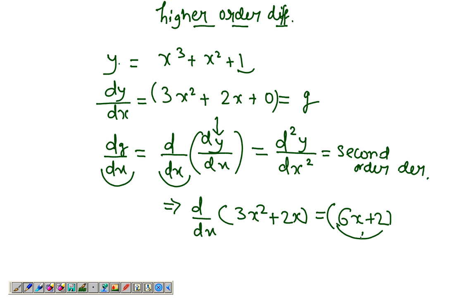Now you can go ahead and again differentiate this to get d³y over dx³, giving you a six, and then finally d⁴y over dx⁴ would be 0 since 6 is a constant.